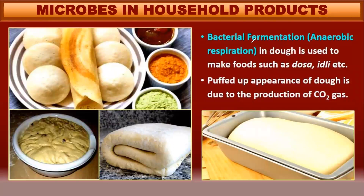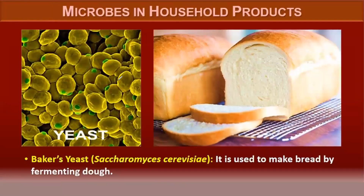Bacterial fermentation, that is anaerobic respiration in dough, is used to make foods such as dosa and idli. The puffed-up appearance of the dough is because of the production of carbon dioxide during anaerobic respiration of bacteria.